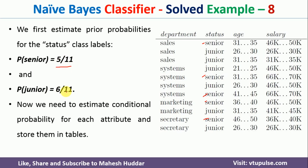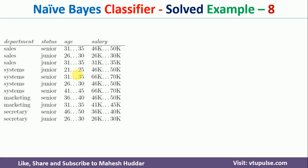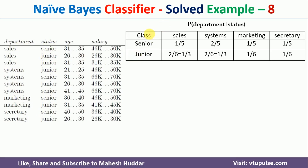Once we calculate the prior probabilities, we need to calculate something called the conditional probabilities. To do that, we can form a contingency table. The first conditional probability is probability of department given status. Department can be sales, systems, marketing, or secretary, and the possible values of status are senior and junior.